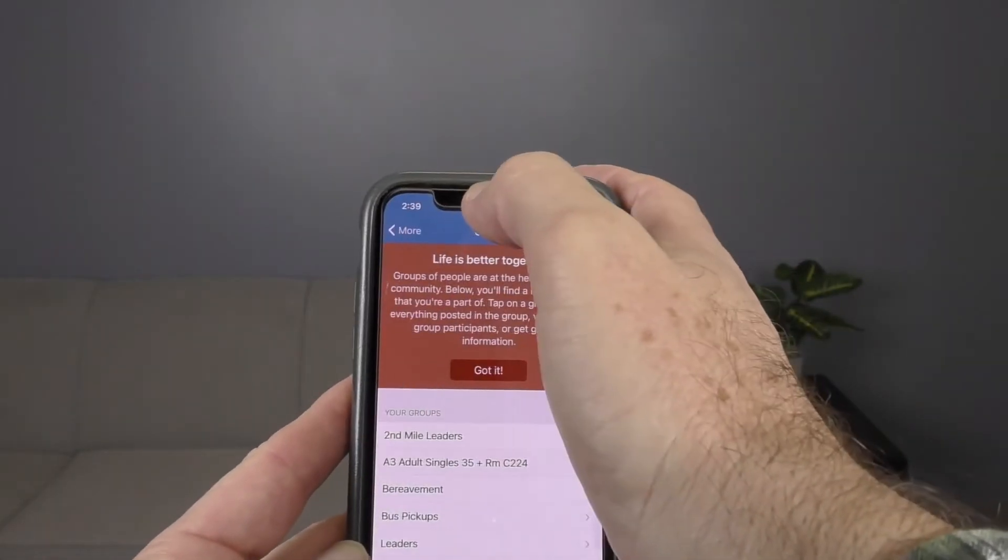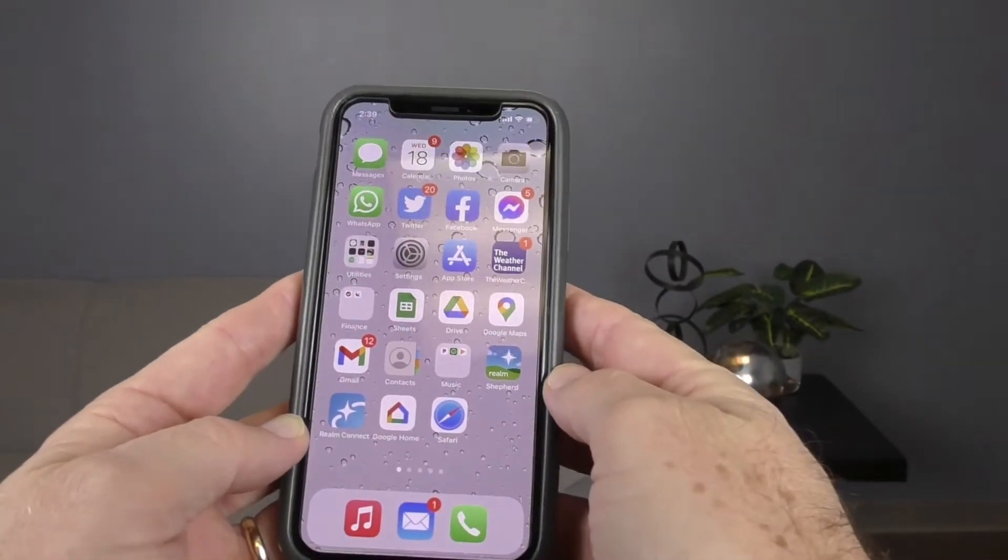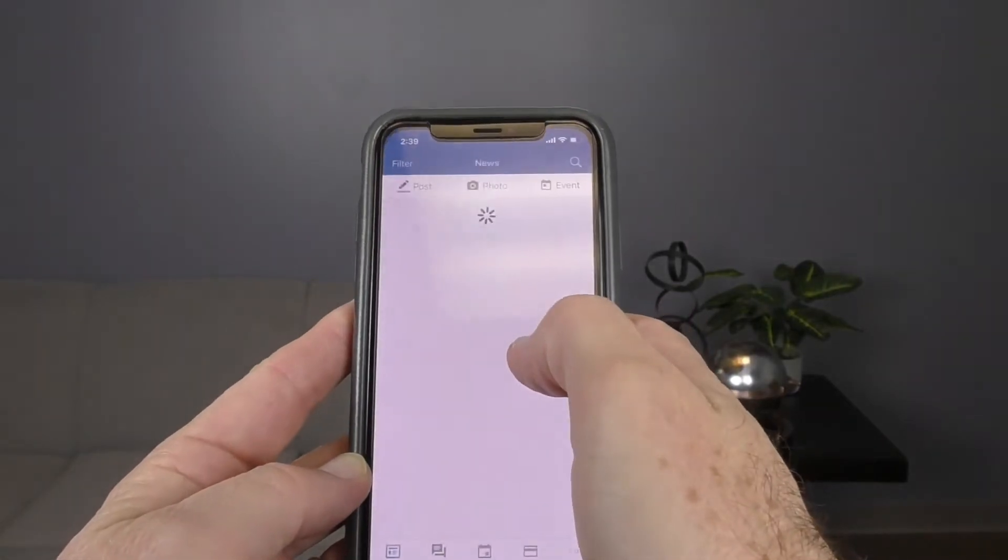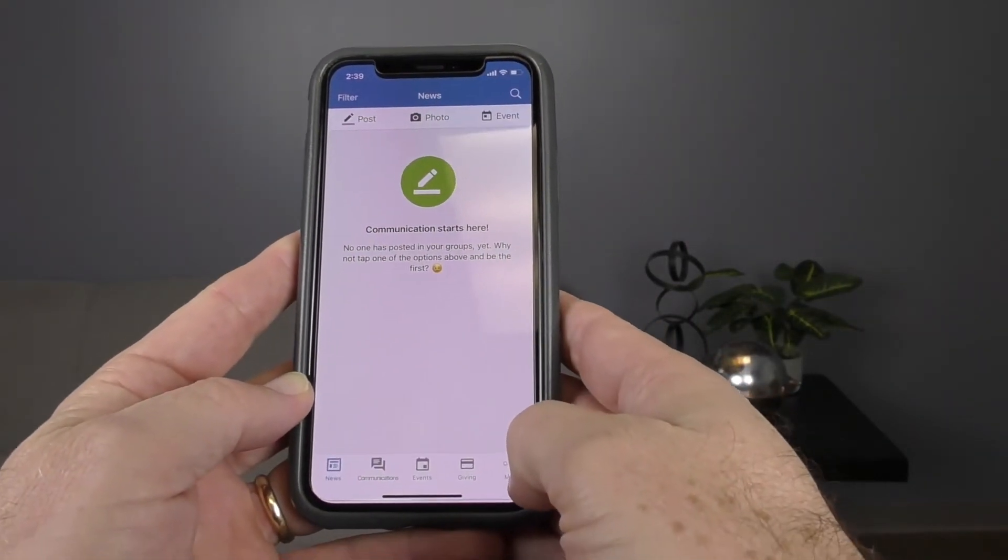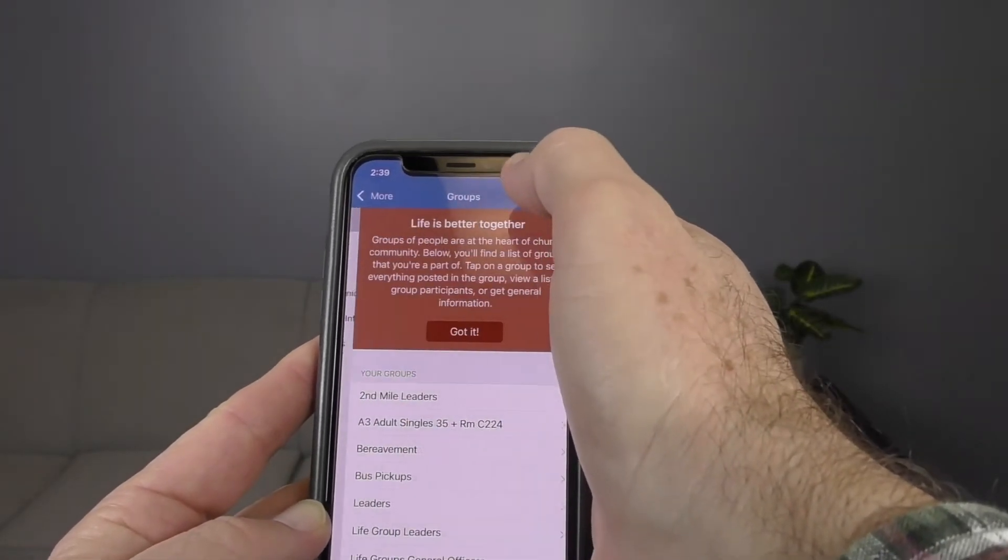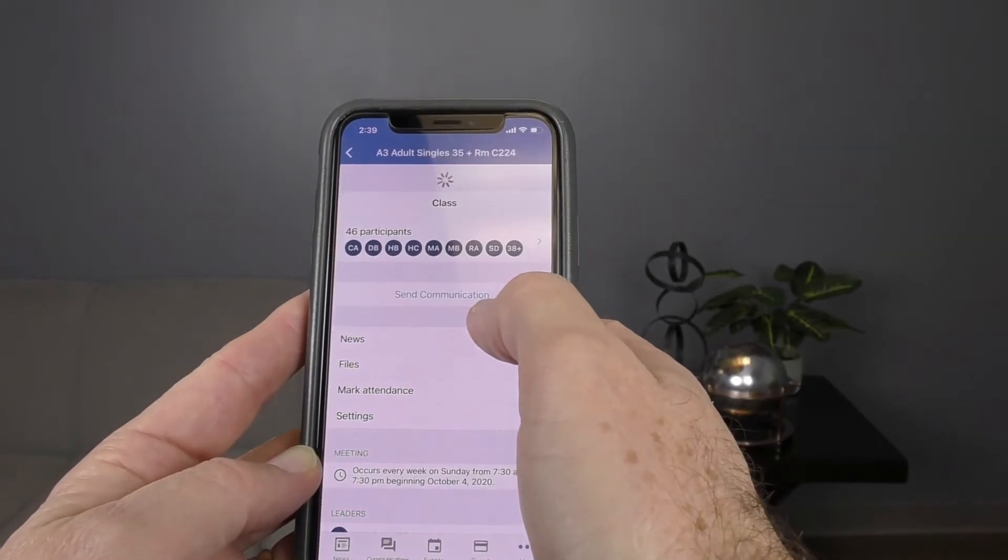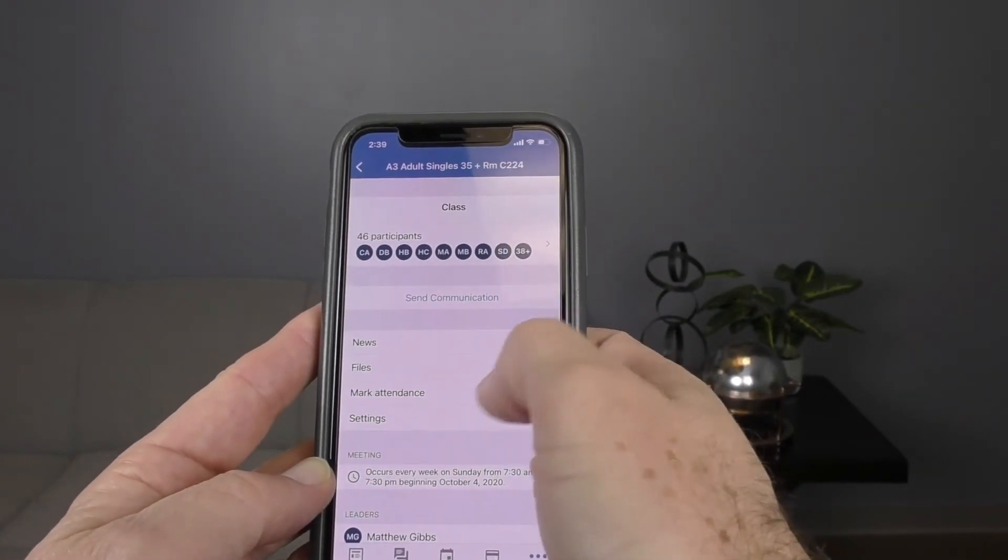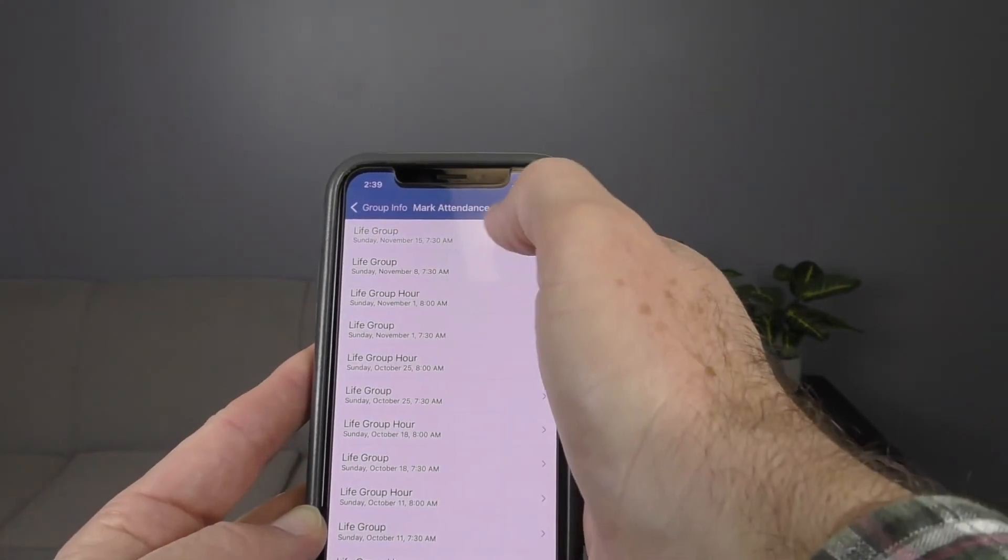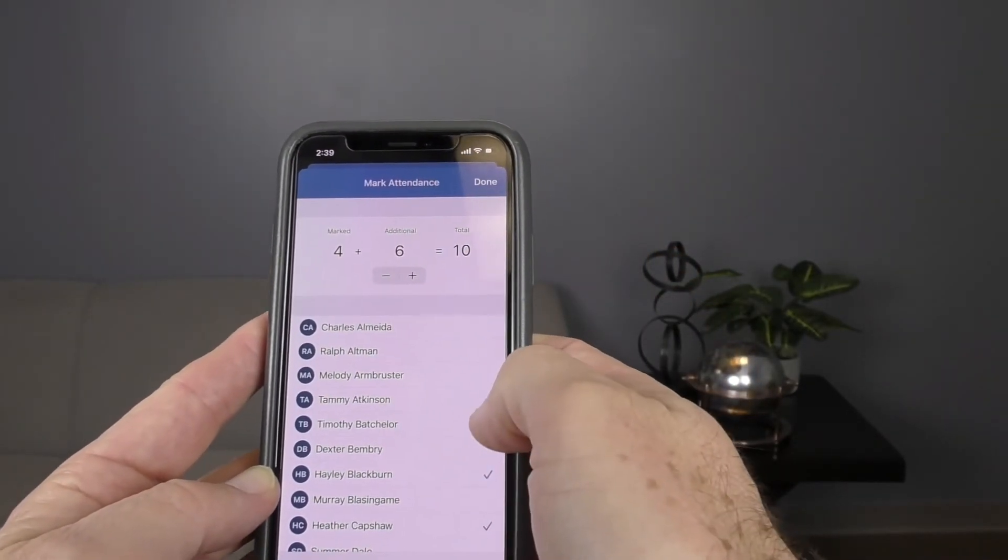Let me go through it one more time for you so you can see. Simply open up the Realm app. Once you open it up, you're going to hit the 'more' section down here at the bottom right. Then 'groups,' you're going to select your life group—whatever life group that is. Mine's Adult Singles, that's the class I teach. Then 'mark attendance.'